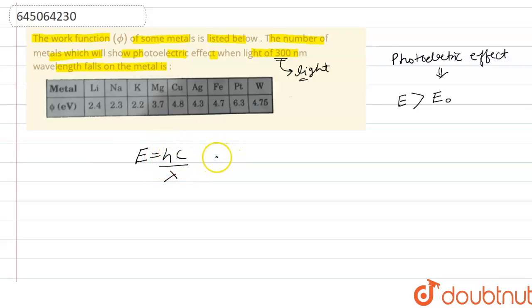Here we have the value of h is 6.626 × 10^-34 joule second, and the value of c is 3 × 10^8 meter per second. And what is lambda given to us? Lambda is 300 × 10^-9 meter. So let's calculate the value.